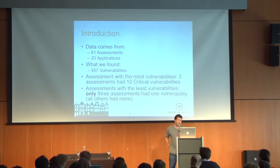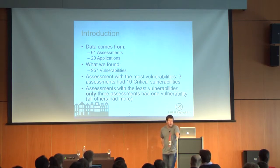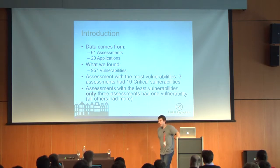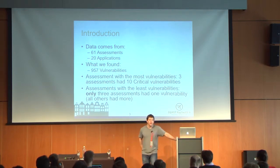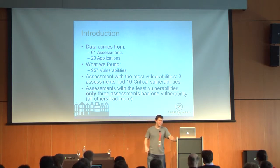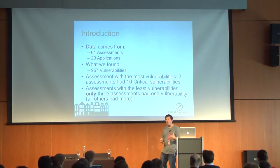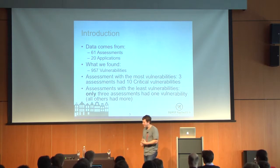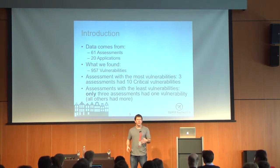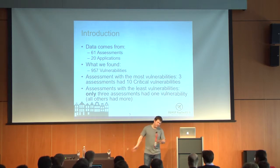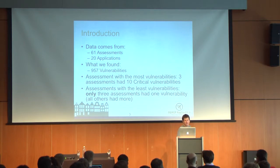What we found is the worst assessment was one where we found an application that had three criticals, but all of the assessments had at least one vulnerability. Much as with web application testing, you always find something. Finding the vulnerabilities for most organizations or most pen testing teams is not the problem — it's convincing someone on the other end to actually fix vulnerabilities. But that's a whole different discussion; it's not what we're looking at today.